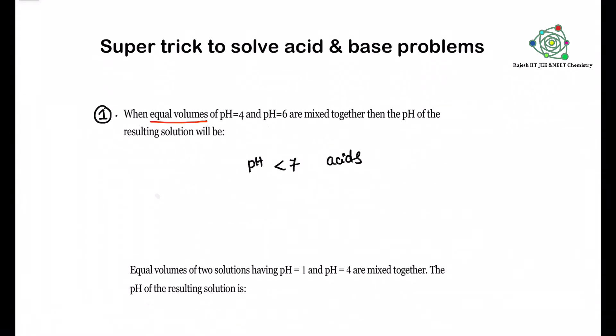If both pH values are less than 7, the resultant solution will be acid. Now both should be taken in equal volume. What is the resultant solution pH? Very simple.